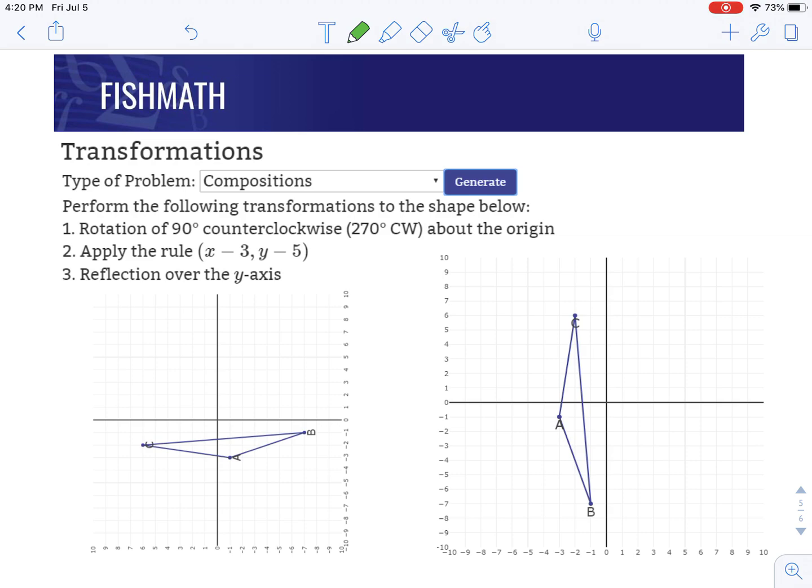When you turn it, you'll see A is now from our center point, from the origin. A is one to the right and three down. Then turn it back, and we want to go from the origin, one to the right and three down. That'll be our new location at A, A prime.